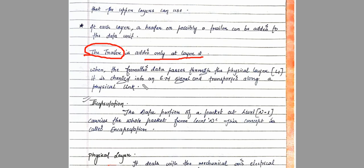Also, whenever any data passes through the physical layer, it is converted into an electromagnetic signal and transported along a physical link. So for any data to be transmitted, it must be converted into a signal, and then it can be transmitted over the physical link.